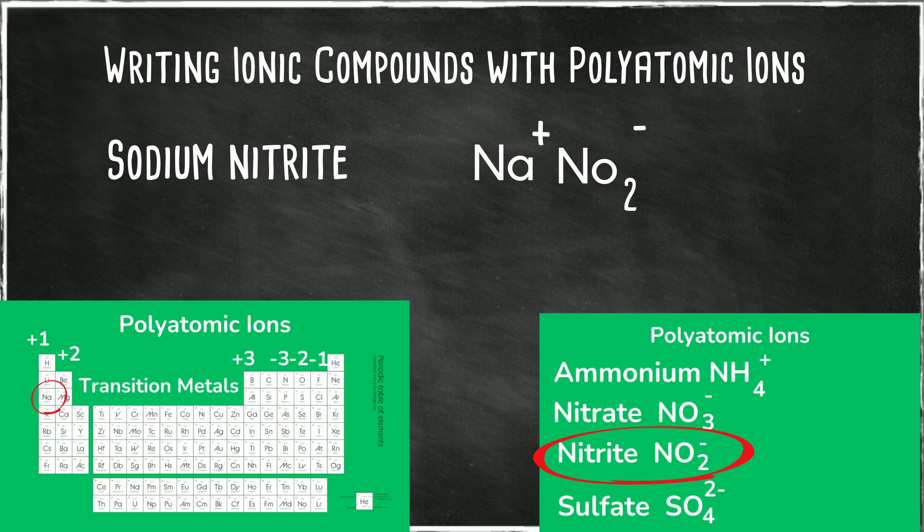So you want a negative 1 charge. You have a plus 1 and a negative 1, so it is 0. So it would just be written as sodium Na and the polyatomic ion nitrite which is NO2.